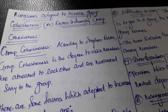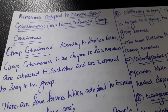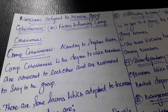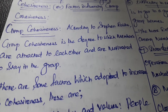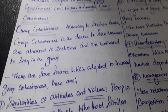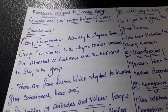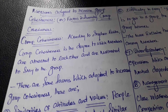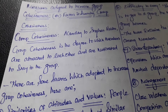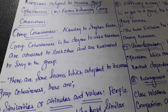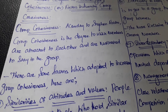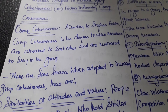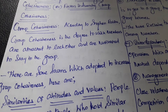Good evening. Today we are going to look at an important topic of organizational behavior. The topic is the measures adapted to increase group cohesiveness, or factors which influence group cohesiveness. Before starting the session, we will look at the meaning of group cohesiveness. According to Stephen Robbins, group cohesiveness is the degree to which members are attracted to each other and motivated to stay in the group — in short, the degree of togetherness among members.